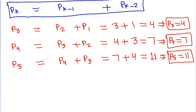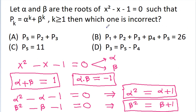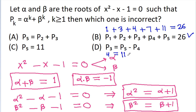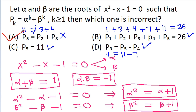Now we have p_1 equals 1, p_2 equals 3, p_3 equals 4, p_4 equals 7, and p_5 equals 11. The sum 1 plus 3 plus 4 plus 7 plus 11 equals 26, so option B is correct. Also p_3 equals 4, which equals p_5 minus p_4, equals 11 minus 7, so option D is correct. And p_5 equals 11, so option C is correct. However, p_5 equals 11, which is not equal to p_2 plus p_3 equals 3 plus 4 equals 7, so option A is incorrect. Since we need the incorrect option, the answer is option A.